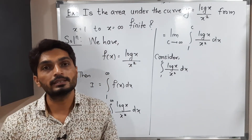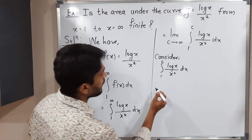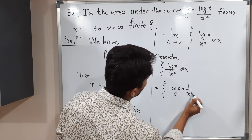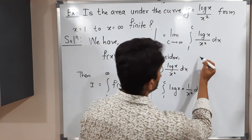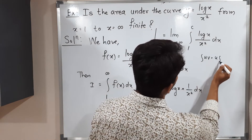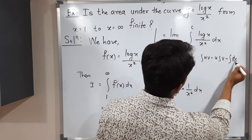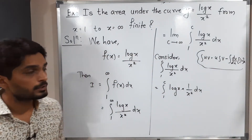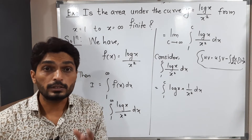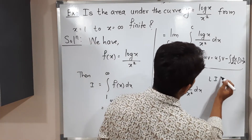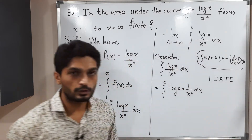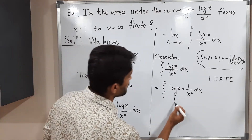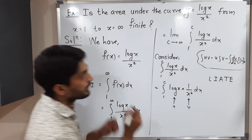To solve this integration, we express it as the integral from 1 to c of log(x) · (1/x²) dx. We use the integration by parts formula: ∫u·v dx = u·∫v dx − ∫(derivative of u · ∫v dx) dx. We follow the LIATE rule — L means logarithmic function, which is always taken first. So log(x) is our u and 1/x² is our v.